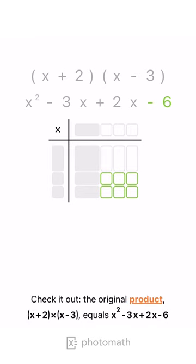The original product, X plus 2, times X minus 3, equals X squared minus 3X plus 2X minus 6.